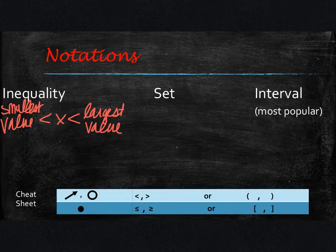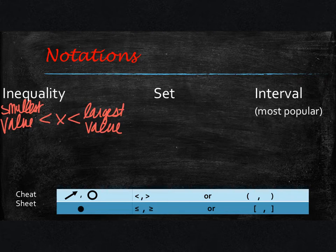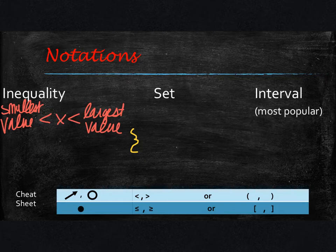The next type of notation is called set notation, and really it's just a fancy way of writing inequality notation. You'll see this more when you get into upper level math classes, and we're starting to introduce it in Algebra 2. There's some stuff at the beginning — it's just fancy mathematical notation that you're going to have to remember when you write in set notation.